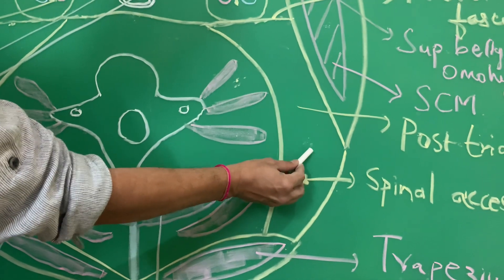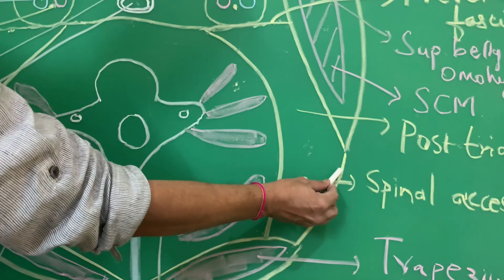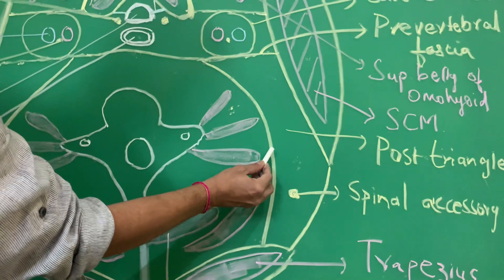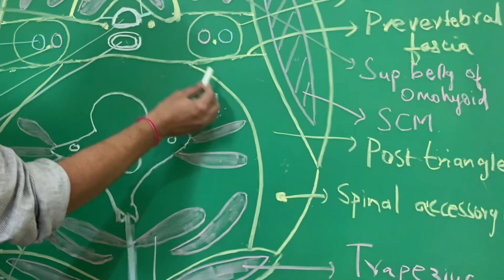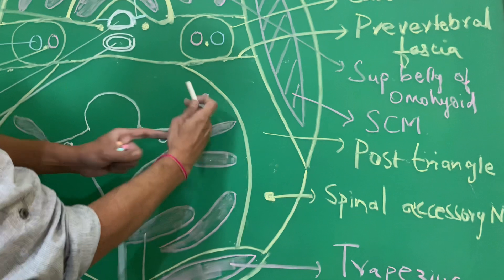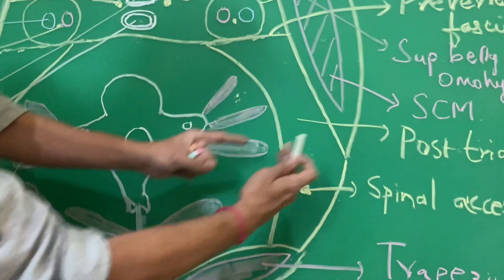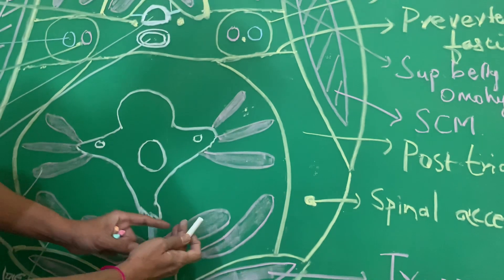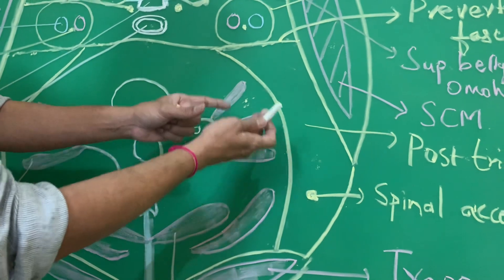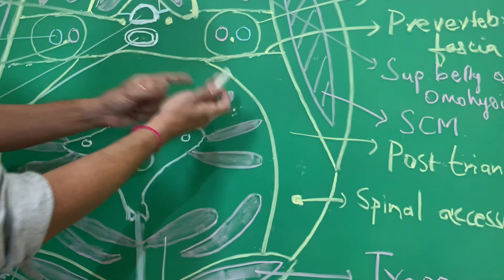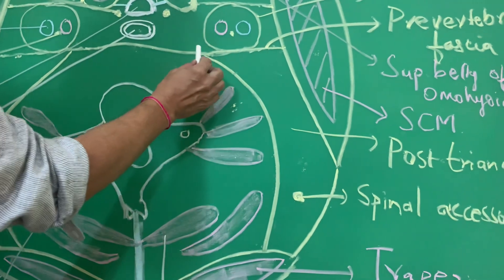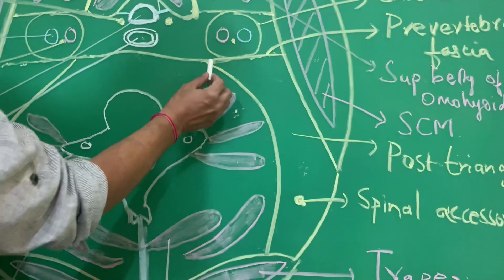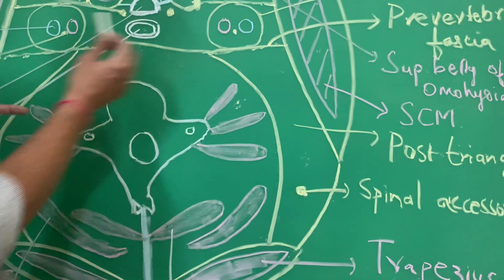This part of the pre-vertebral fascia forms the floor of the posterior triangle. In the posterior triangular region, the roof is formed by the investing layer and the floor is formed by this pre-vertebral fascia. The muscles forming the floor of the posterior triangle — semispinalis capitis, splenius capitis, levator scapulae, scalenus posterior, and scalenus anterior — are all carpeted by the pre-vertebral fascia.